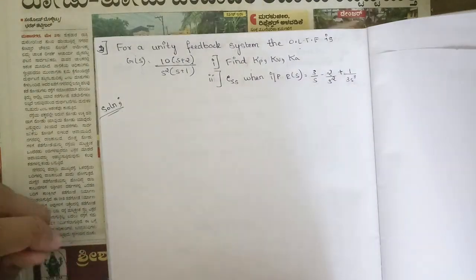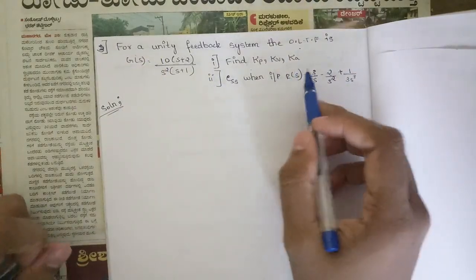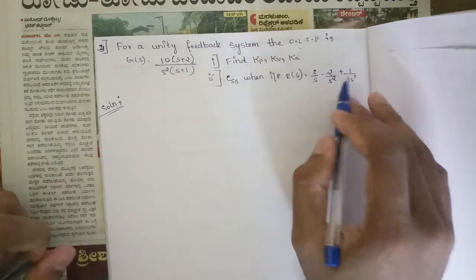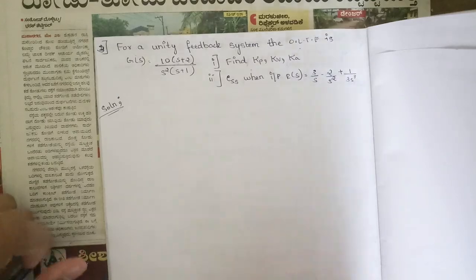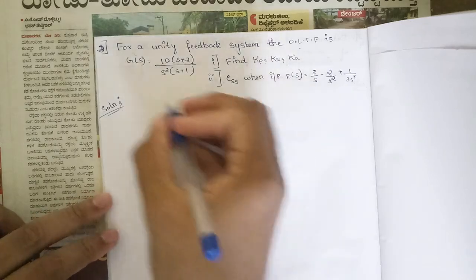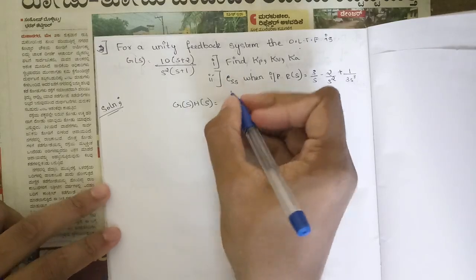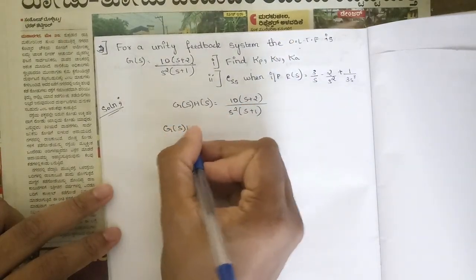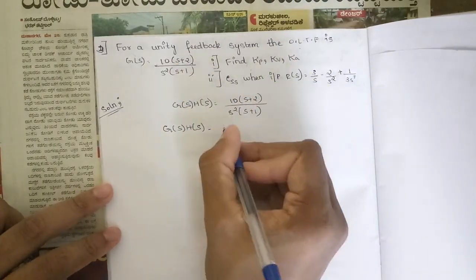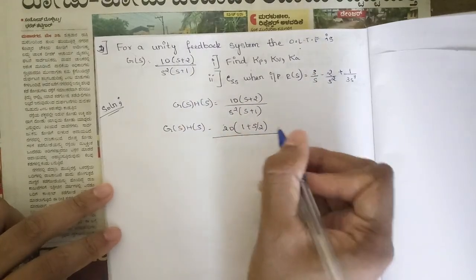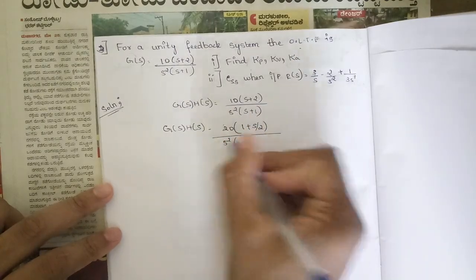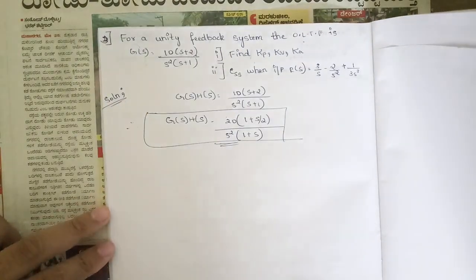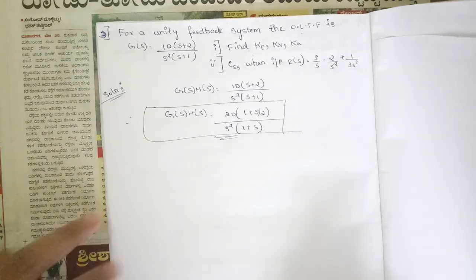This problem is similar to the last one, but with a slight change in the transfer function and the input. Previously the input was given in the time domain; here it is given in the s-domain. It is again a combination of step, ramp, and parabola. Now let's write the open loop transfer function G(s)H(s) = 10(s+2) / [s²(s+1)] in general form: taking 2 outside gives 20·(1 + s/2) / [s²·(1 + s)].